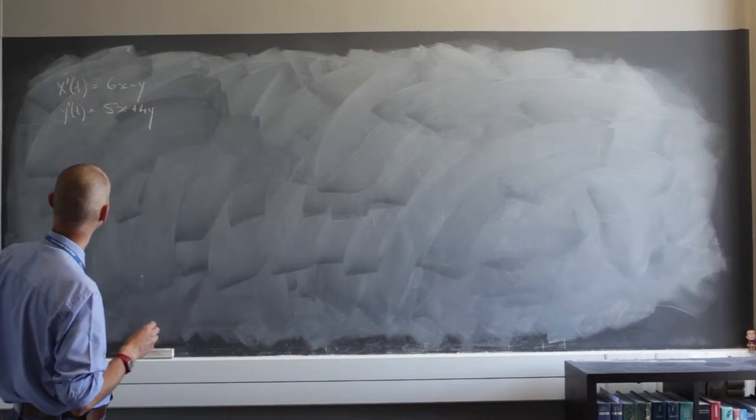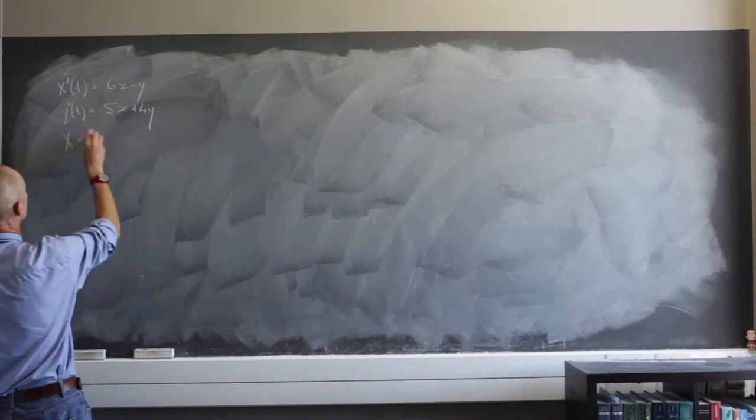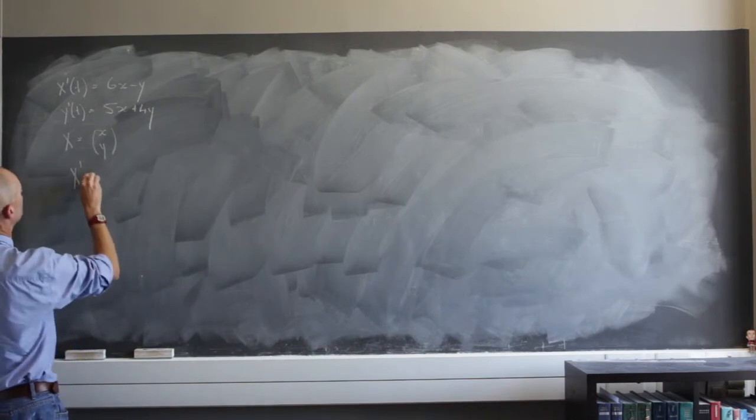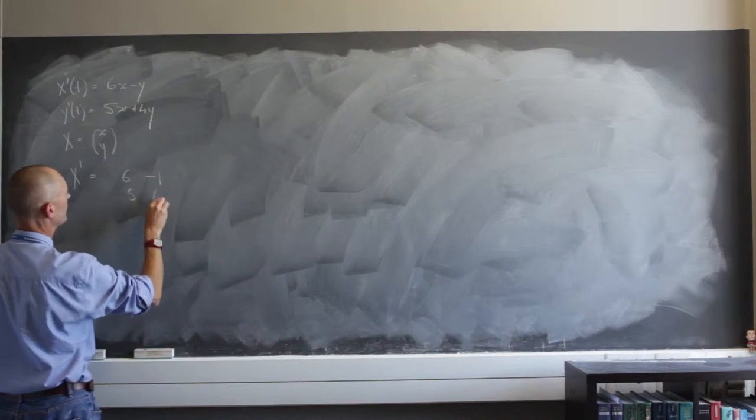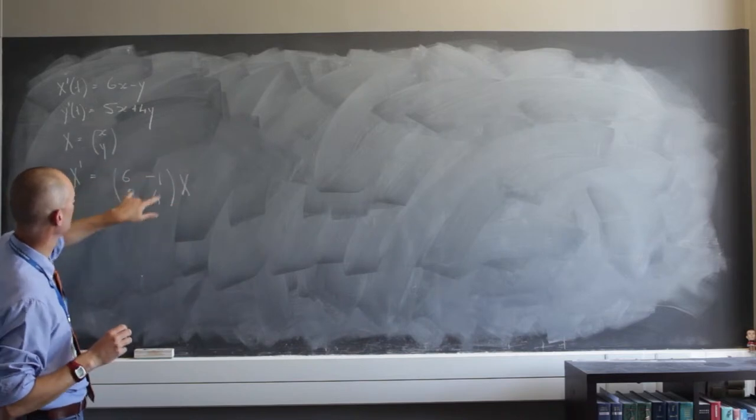I say that's a linear system of differential equations. I need to solve for that. If I let x equal this column vector xy, that means I'm going to have x prime equals the matrix 6 and negative 1, 5 and 4 as my matrix of coefficients, times x. If that's xy, if I put x and y there and multiply this out, I'm going to be exactly there.